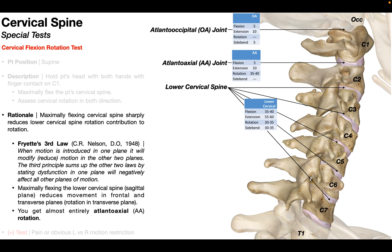Every one of these joints has a certain range of motion they allow for each movement. Specifically, we're interested in rotation. The atlanooccipital joint doesn't permit any rotation. The atlanoaxial joint permits between 35 and 40 degrees of rotation. All of the lower cervical spine joints combined allow 30 to 35 degrees of rotation. So if we wanted to specifically look at the amount of atlanoaxial rotation, we can't just do the normal goniometric measurement for cervical rotation, because we'd be getting a combination of rotation permitted by the AA joint and rotation permitted by the lower cervical spine.